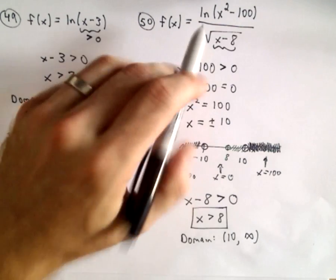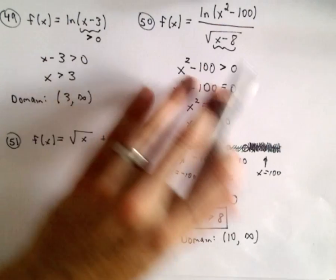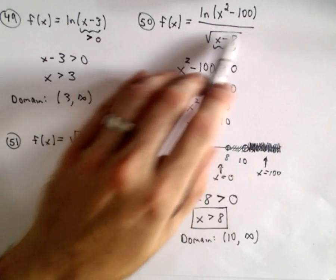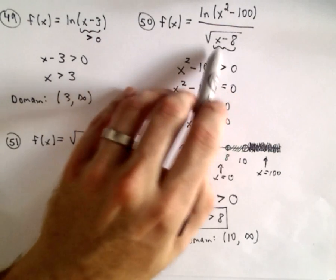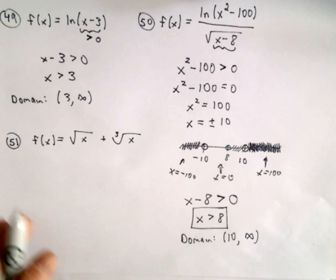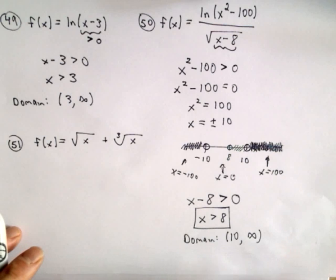Those are the only numbers that are going to satisfy the domain for both the logarithm and it's also going to make the numbers underneath the square root positive. Okay, so that's why I said in the previous video I think 50 is a little, maybe a little more complicated. But again, hopefully not too bad.